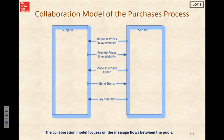Sunset requests a price and availability. The supplier provides the prices and availability. Sunset places a purchase order. The supplier sends the item. Sunset pays the supplier.